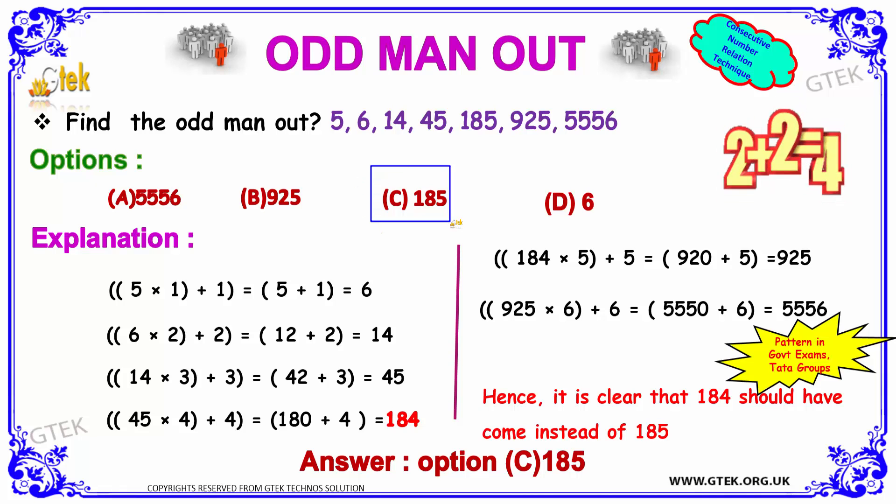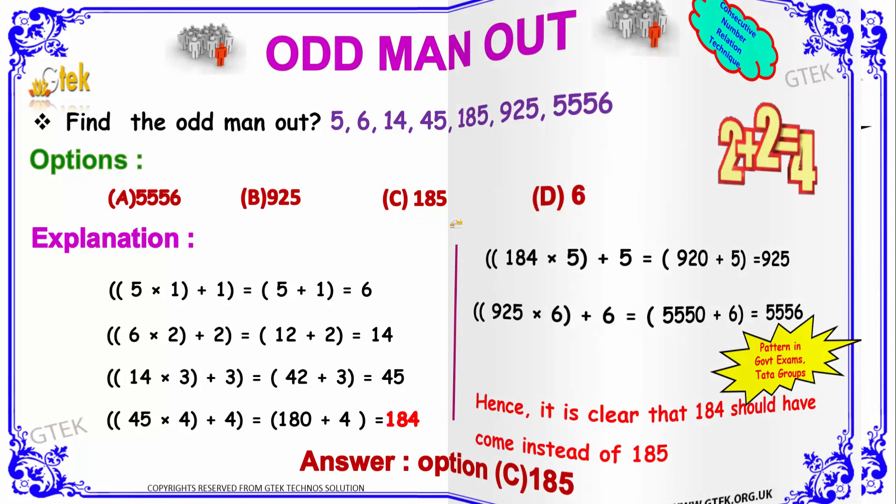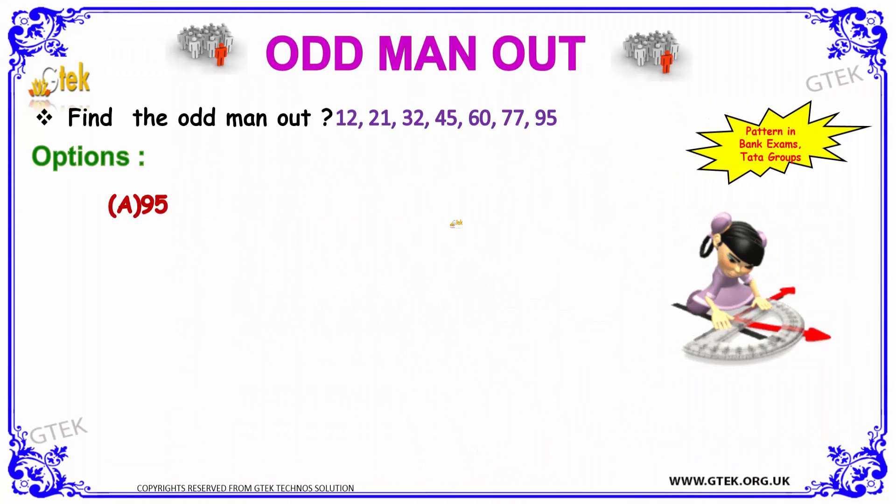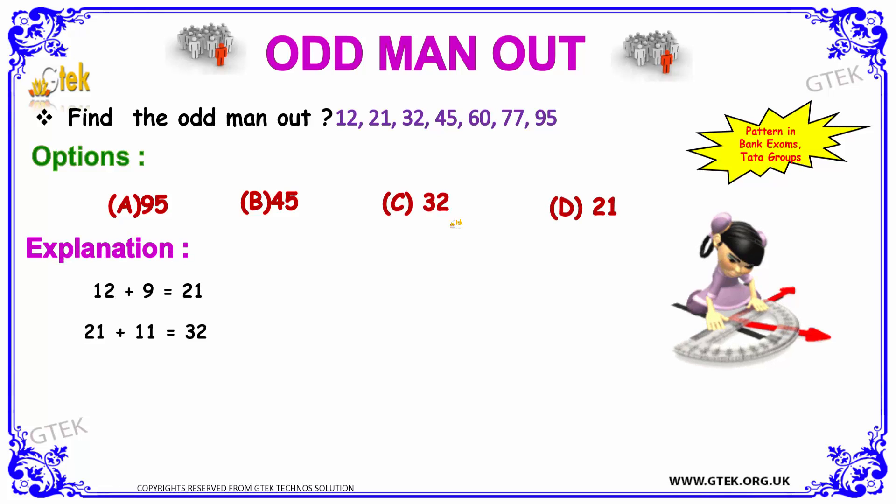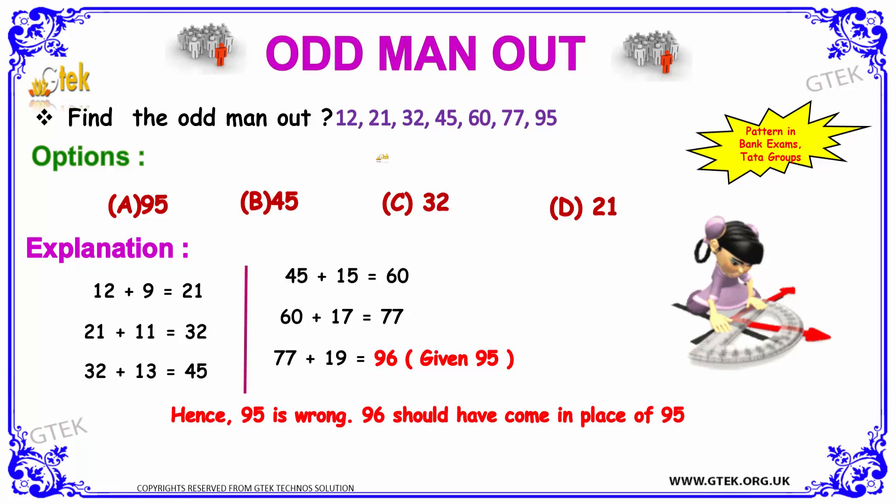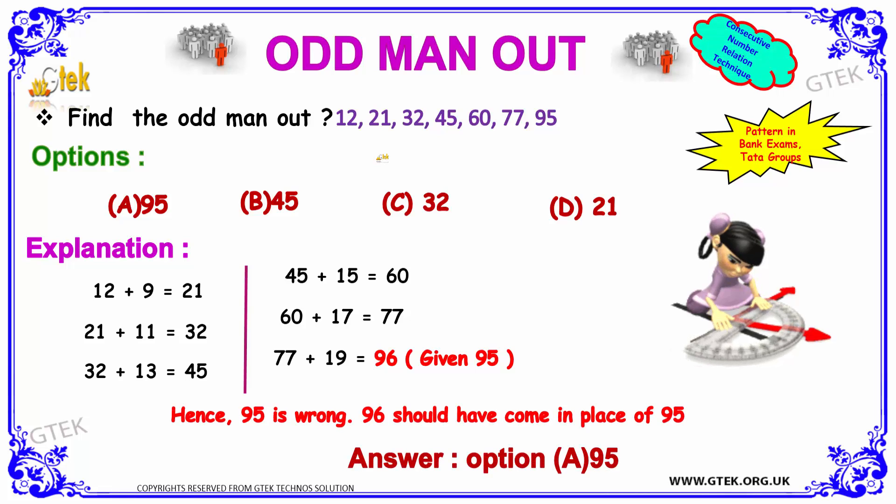The option is 185. This one is interesting. Now we can see here 12, 21, 32. If you see the difference between 12 and 21, you got 9. And the difference between 21 and 32, you got 11. From 32 to 45, you got 13. 45 and 60, you got 15. So it's an odd number: 9, 11, 13, 15.